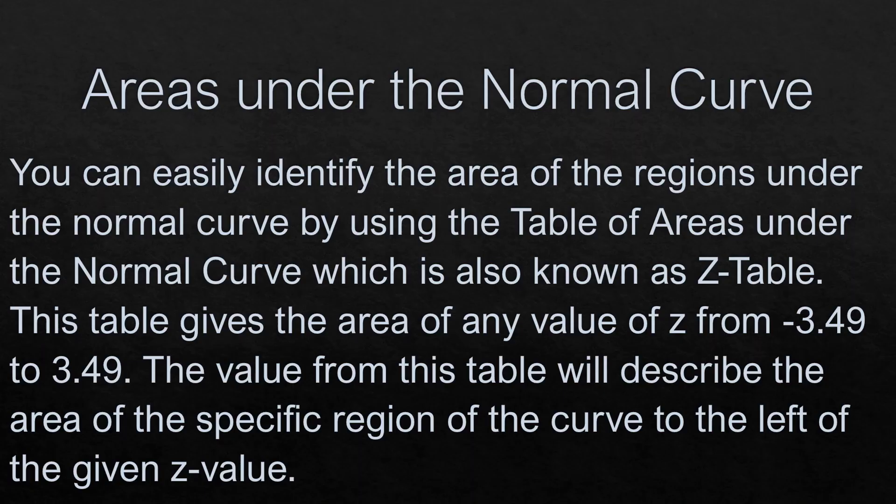You can easily identify the area of the region under the normal curve by using the table of areas under the normal curve which is also known as z-table. This table gives the area of any value of z from negative 3.49 to 3.49.